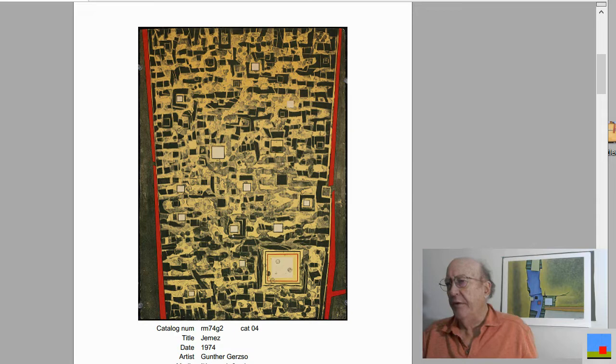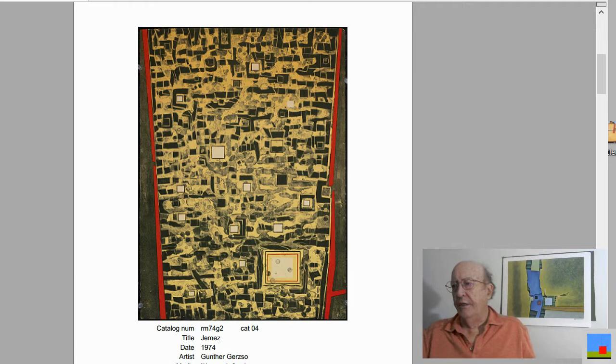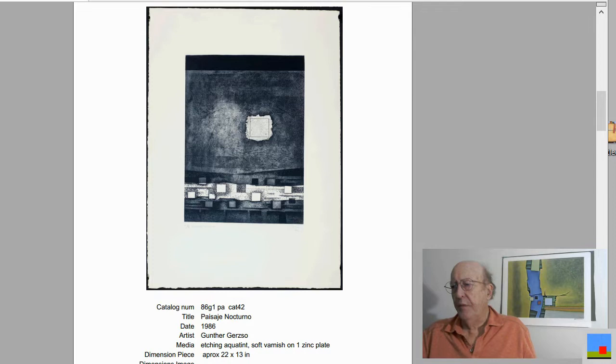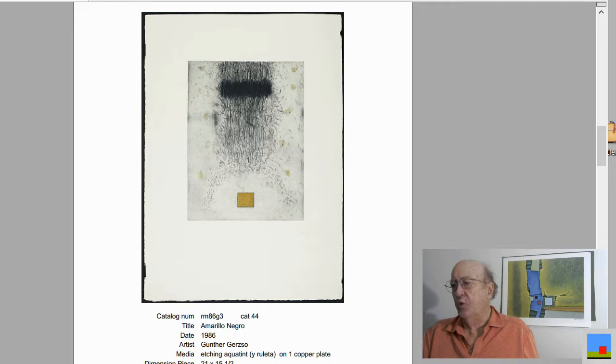I'm going to show you some prints and there were additions. So the first one here is Jemes, 1974. It's 20 by 15 inches, not very big. It's a lithograph, six colors. This is an etching. It's interesting because it's only one color, etching aquatint. Here's another etching. Unusual. 1986. Not very big. 21 inches by 15.